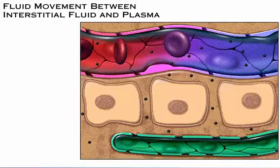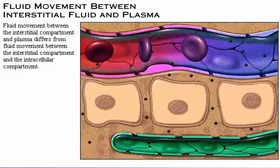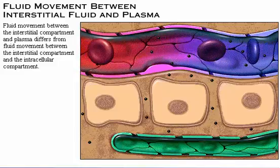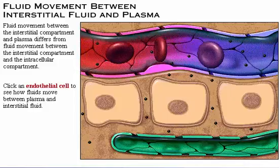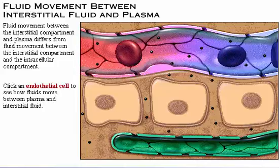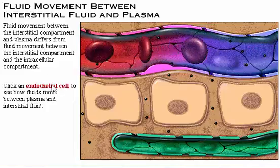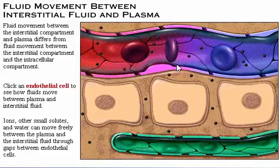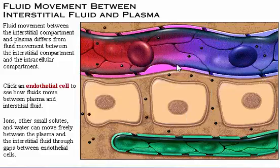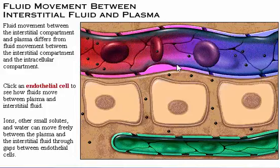Fluid movement between the interstitial compartment and plasma is quite different from the movement between the interstitial compartment and the intracellular compartment. Ions, other small solutes, and water can move freely between the plasma and the interstitial fluid through gaps between endothelial cells.